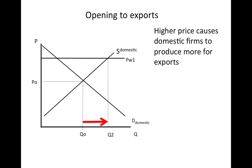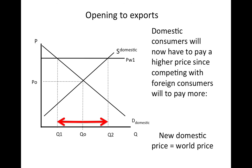As prices go up, domestic firms will decide to make more of this product — expanding from quantity Q0, the autarky quantity, to Q2, where the price meets the domestic supply curve. But there's also a downside: the increase in price will reduce the amount that domestic consumers purchase. Foreigners are willing to pay a higher price, so domestic consumers get at least partially priced out of the market, with consumption falling from Q0 to Q1.